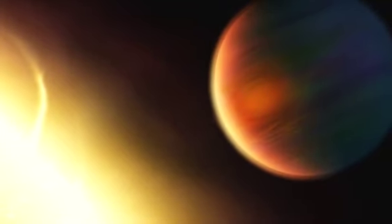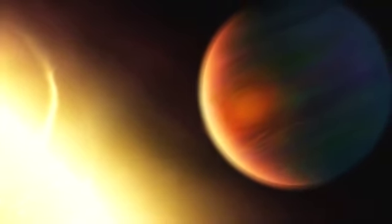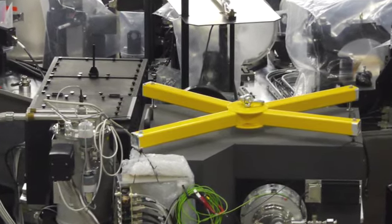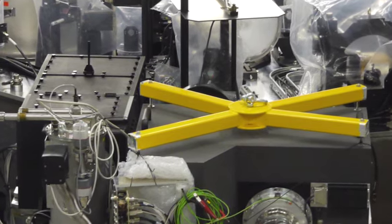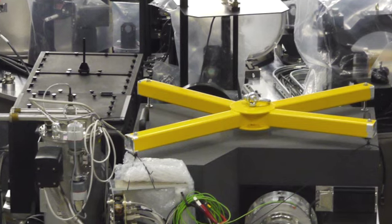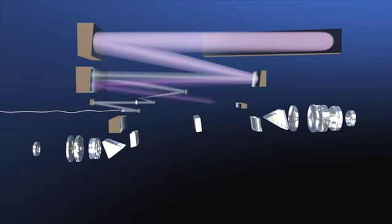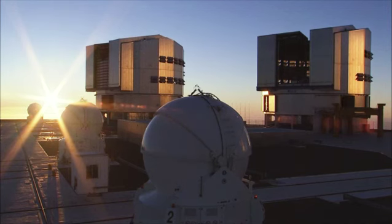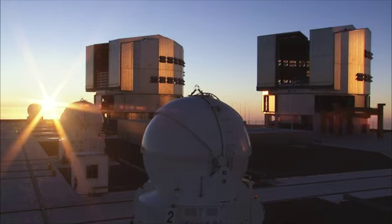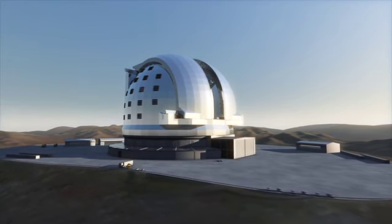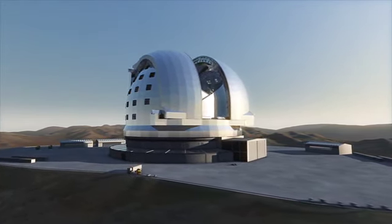Gas giants and sauna worlds are inhospitable to life, but the hunt is not over yet. Soon, the new Sphere instrument will be installed at the VLT. Sphere will be able to spot faint planets in the glare of their host stars. In 2016, the ESPRESSO spectrograph will arrive at the VLT and greatly surpass the current HARPS instrument. And ESO's Extremely Large Telescope, once completed, may well find evidence for alien biospheres.